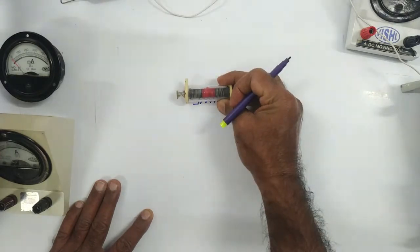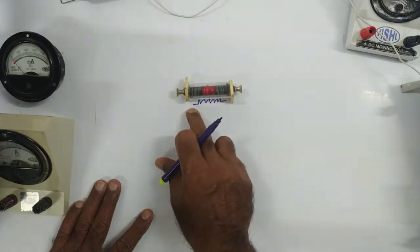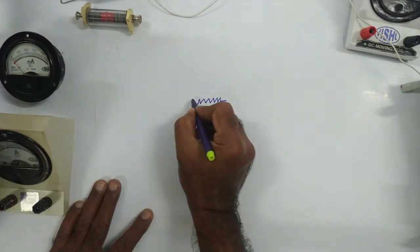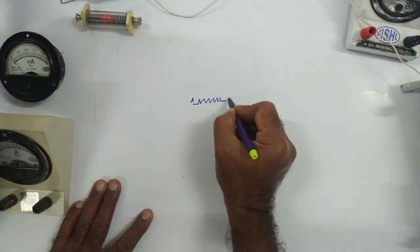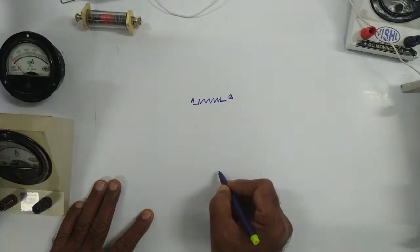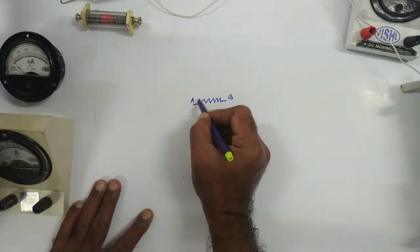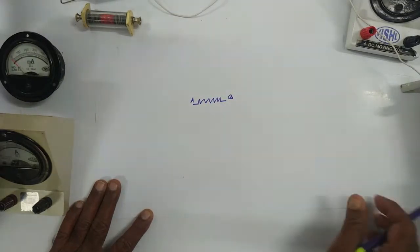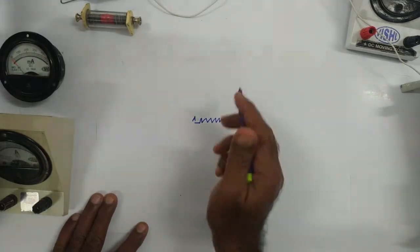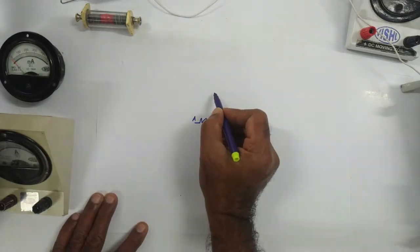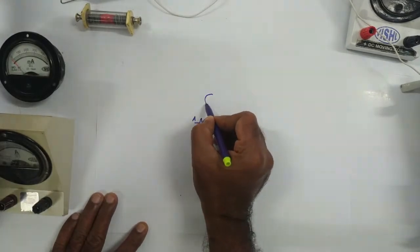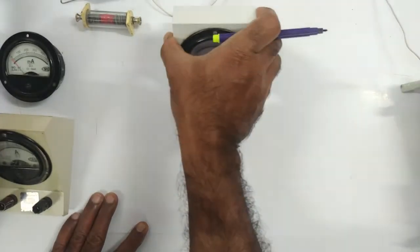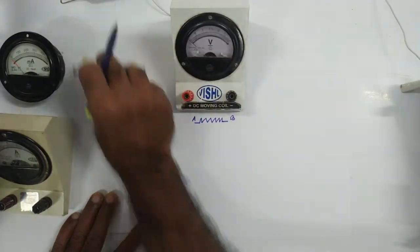Now we have to find out the potential difference or the voltage across these two ends — let's say this is end A and this is end B. And I have to connect a voltmeter across the two ends of the resistor. We have to keep a voltmeter here. And what is the symbol of voltmeter? This is the voltmeter. Just for example, I am keeping it here in front of the resistor.